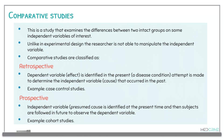The third type is comparative studies, where you examine the difference or comparison between two groups on some independent variables of interest. Unlike experimental design, the researcher is not able to manipulate any of the independent variables. In retrospective comparative studies, dependent variables are identified in the present and an attempt is made to determine the independent variable that occurred in the past — an example is case-control studies. In prospective comparative studies, an independent variable is identified at the present time and subjects are followed into the future to observe the dependent variable — an example is a cohort study.